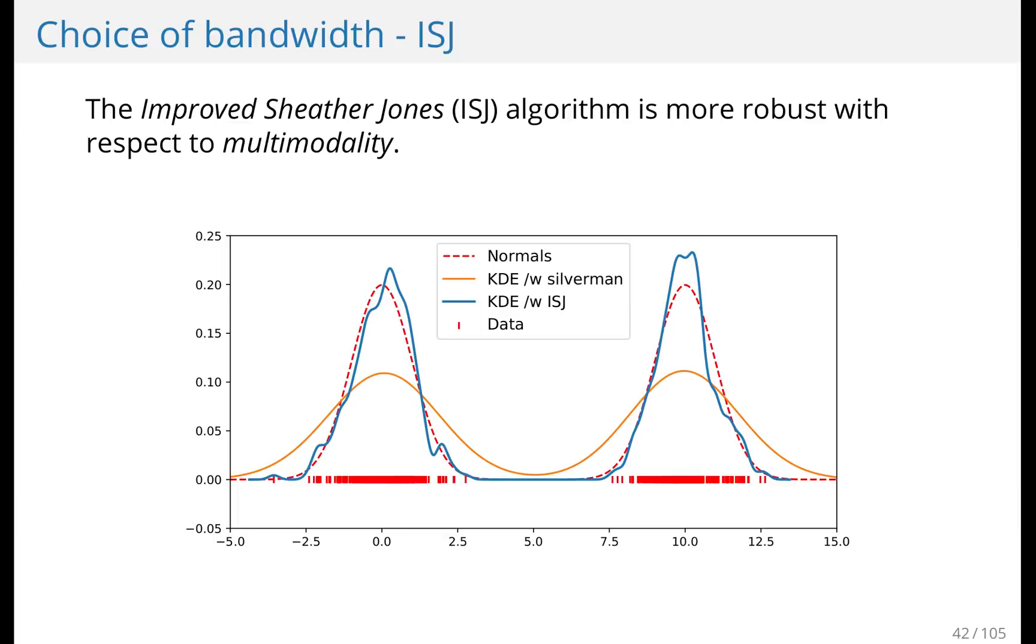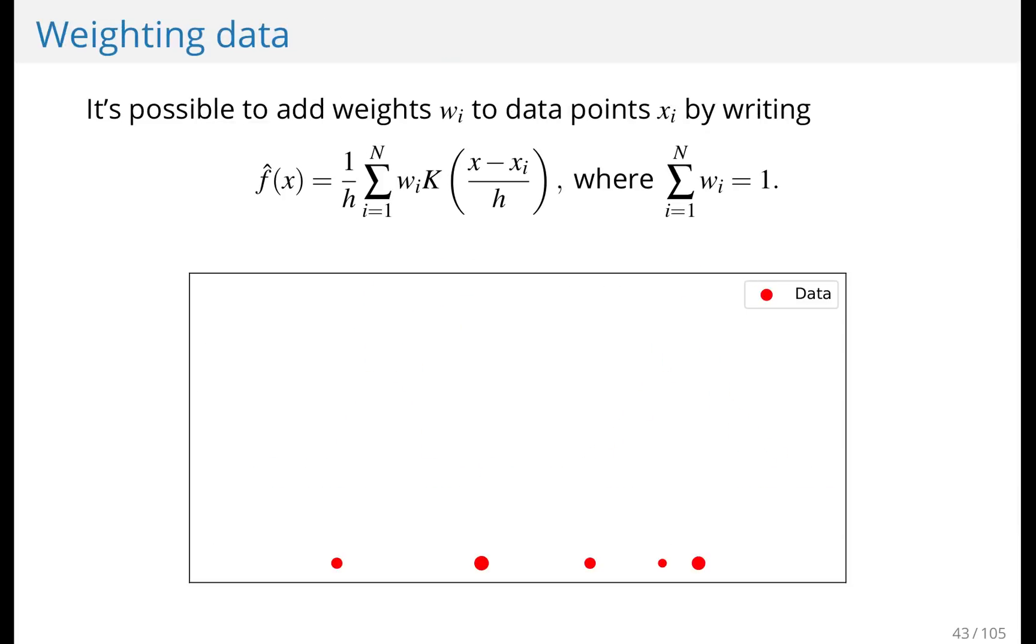The next thing to look at is weighing the data. In the previous example, every data point was weighted uniformly, meaning it had the same weight. But you might have cases where each data point has a weight. For instance, if these data points are the age of people, and you want to know the distribution of net worth over age, you might put age on the x axis and weigh your data points by the net worth of each individual.